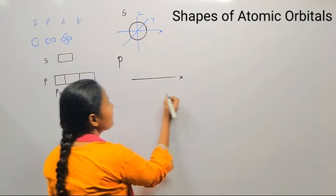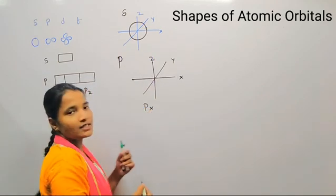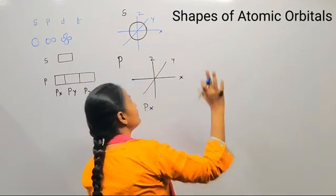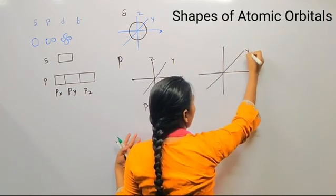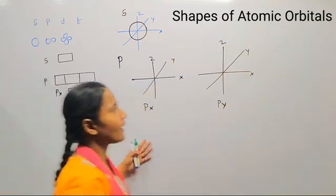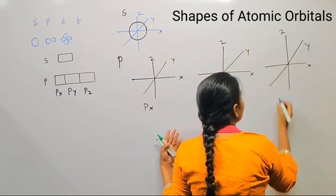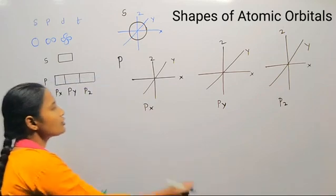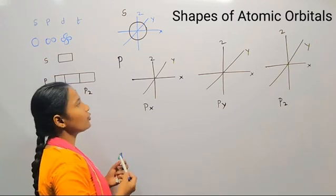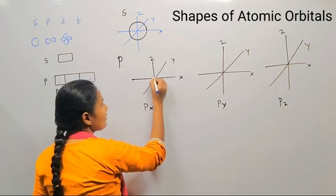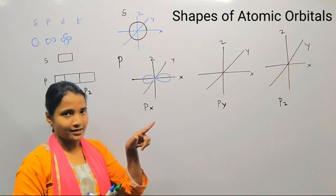We can draw the p orbitals using the three coordinate axes: x-axis, y-axis, and z-axis. We write px, py, and pz. The p orbital has a dumbbell shape. For px, you draw the dumbbell shape along the x-axis. You should remember that while drawing a p orbital, the orbital always lies along the axis.